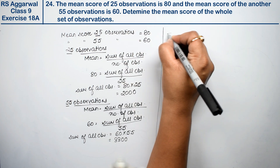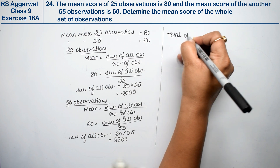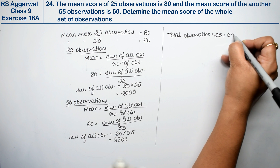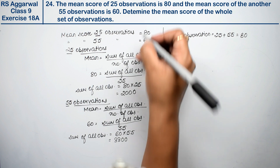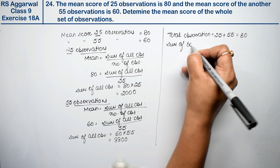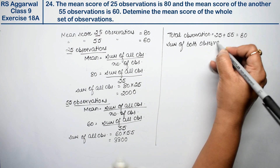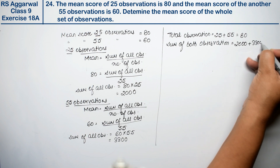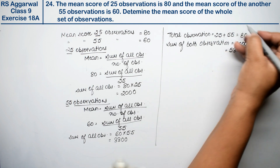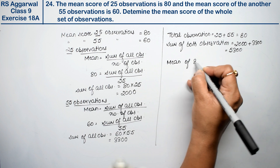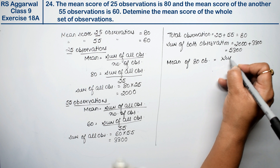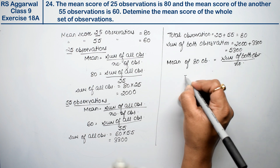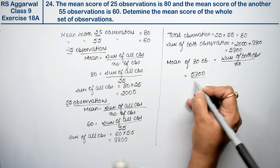Total observations are 25 plus 55 equals 80. Sum of both observations is 2000 plus 3300, that is 5300. Now we have to find the mean of all 80 observations: mean equals sum of both observations divided by number of observations.